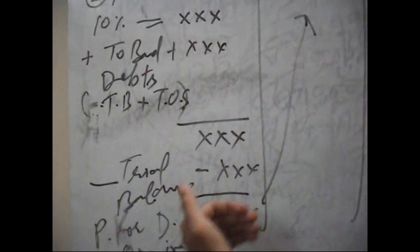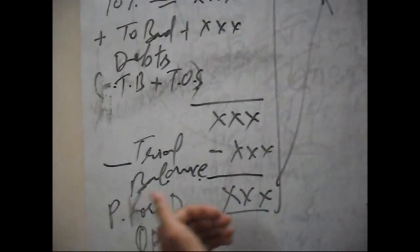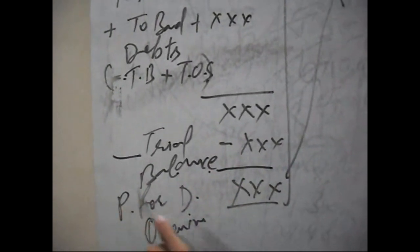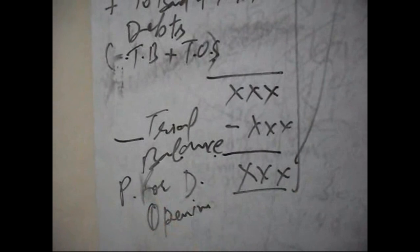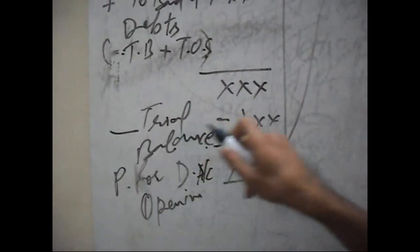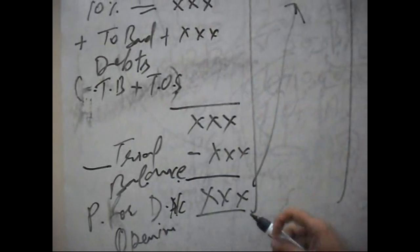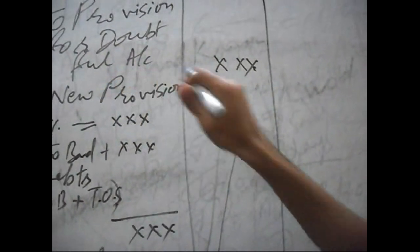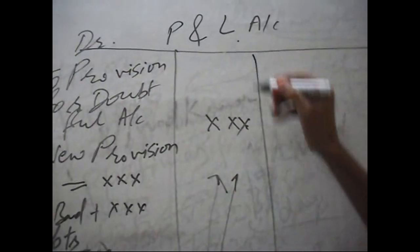You show its total, and then you deduct the amount of opening balance of provision for doubtful debt account which is showing in trial balance. From this total, the net amount of provision for doubtful debt account will go to profit and loss account's debit side.